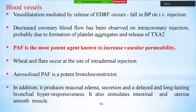On blood vessels, PAF causes release of endothelial-derived relaxing factors leading to vasodilation and decreased blood pressure when administered intravenously. Decreased coronary blood flow has been observed with intracoronary injection, possibly due to PAF aggregates and thromboxane A2 formation. PAF is the most potent known agent to increase vascular permeability and produces wheal and flare reactions at the site of intradermal injection, similar to histamine.